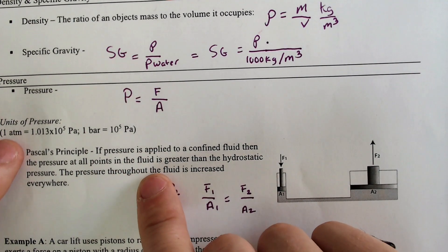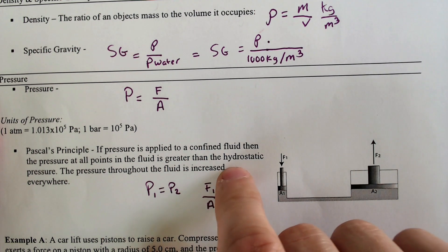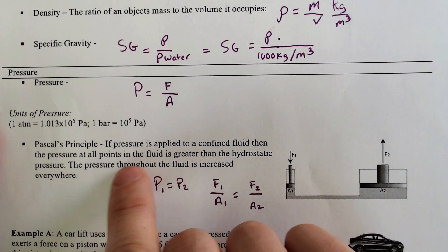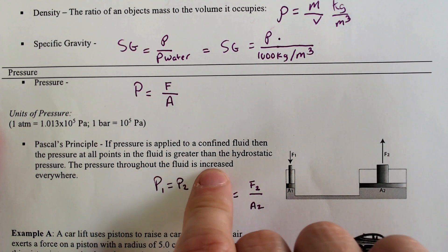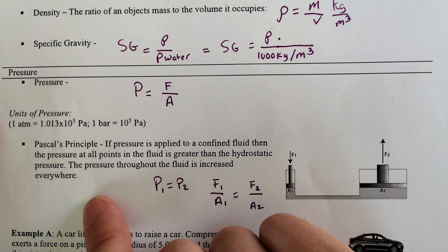Pascal's principle. If the pressure is applied to a confined fluid, then the pressure at all points in the fluid is greater than the hydrostatic pressure. The pressure throughout the fluid is increased everywhere.